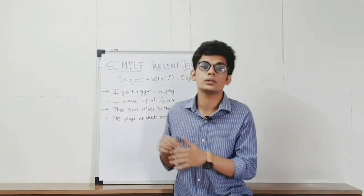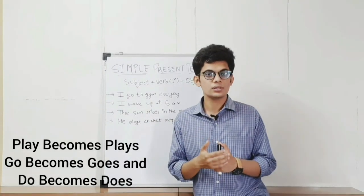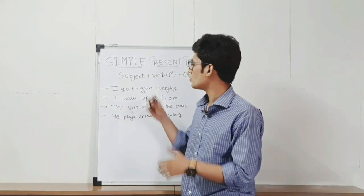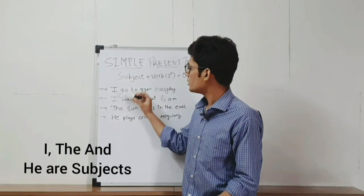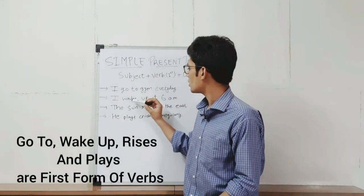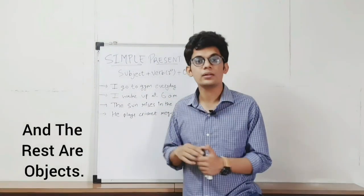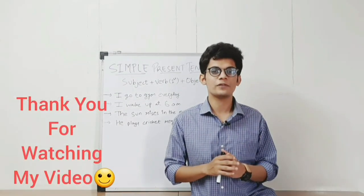he, she, it. So 'play' becomes 'plays', 'go' becomes 'goes', and 'do' becomes 'does'. So the structure of these sentences: 'I', 'you', and 'he' are subjects; 'go to', 'wake up', 'rises', 'plays' are first form of verb; and the rest are objects. Thank you for watching my video.